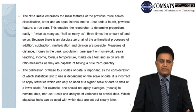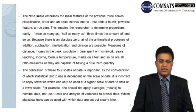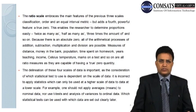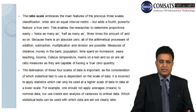The ratio scale is the fourth level. It embraces the main features of the previous three scales — classification, order, and an equal interval metric — but adds a true zero. This enables the researcher to determine proportions easily: twice as many as, half as many as, three times the amount of, and so on. Because there is an absolute zero, all arithmetic processes of addition, subtraction, multiplication, and division are possible. Measures of distance, money, population, time spent on homework, years teaching, income, Celsius temperature, and marks on a test are all ratio measures, as they are capable of having a true zero quantity.